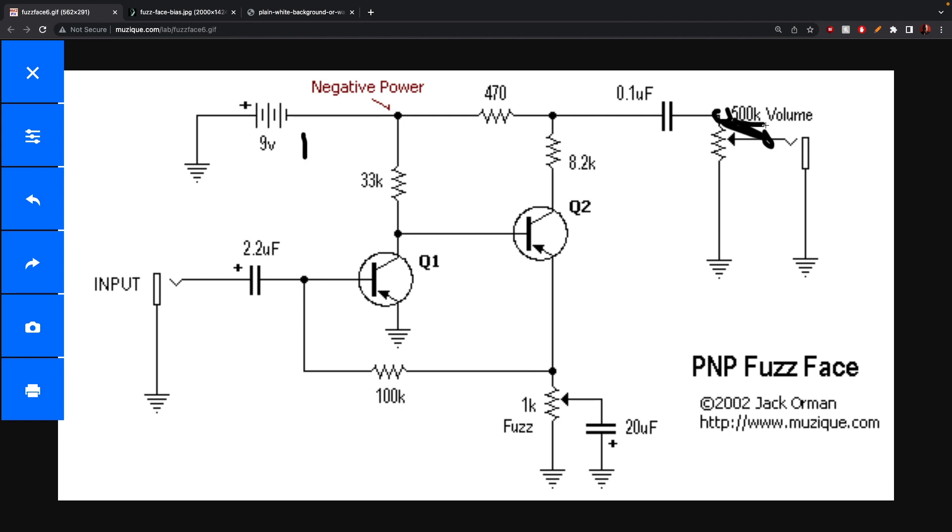And I've seen some people will do a mod where instead of 500k here, you'll do 100k, which will affect how much, I think that will reduce the amount of lows in the whole thing and the whole output. So that's another place you can mod. Just to be clear, when you turn the volume down, you also cut out more of the base. That's the relationship here.